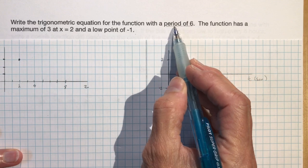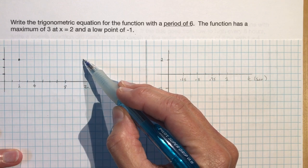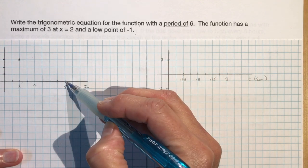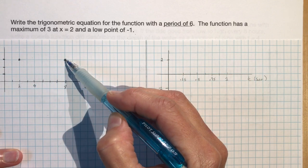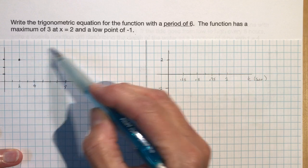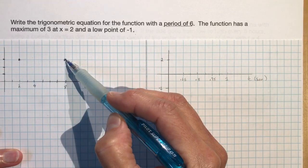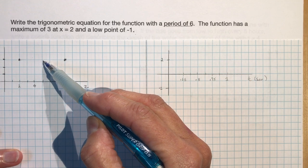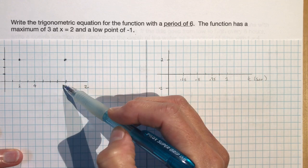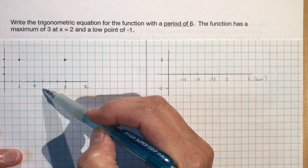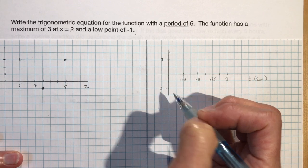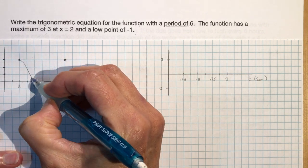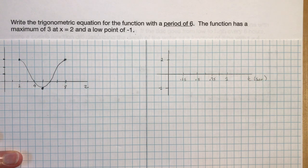The low point occurs halfway between x equals 2 and x equals 8, which is at x equals 5, and the low point is minus 1. You should make a quick sketch — it always seems easier to figure out your shift when you can see it visually. So I have a basic sketch of what the function is going to look like.